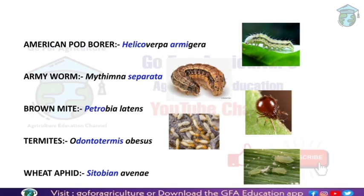Whenever you remember American army, you will basically remember helicopters. So in Helicoverpa, we can remember 'helico' - we can relate this 'helico' to helicopters. That is how you remember the first part of the scientific name Helicoverpa armigera.